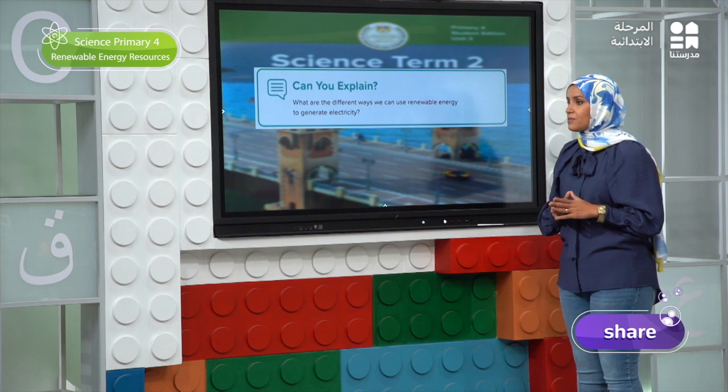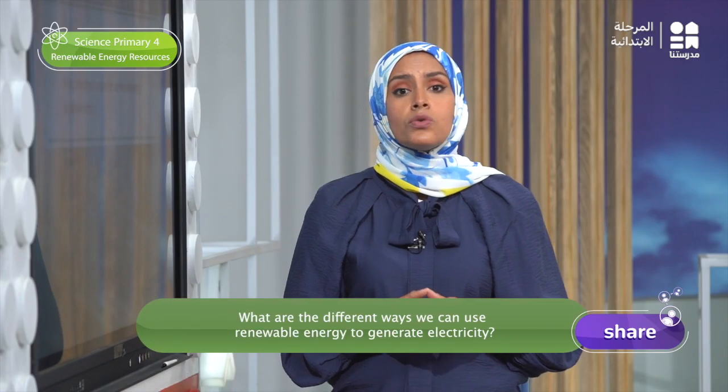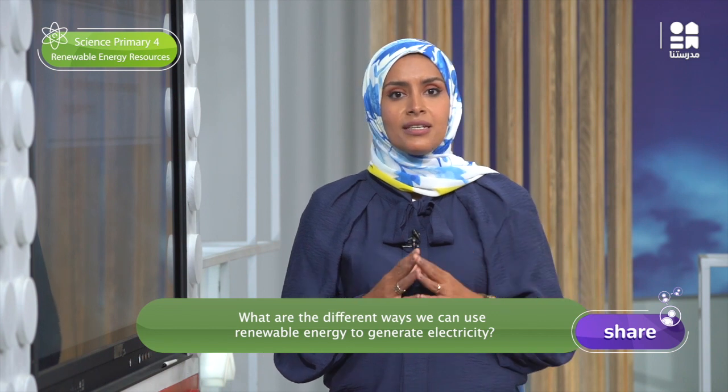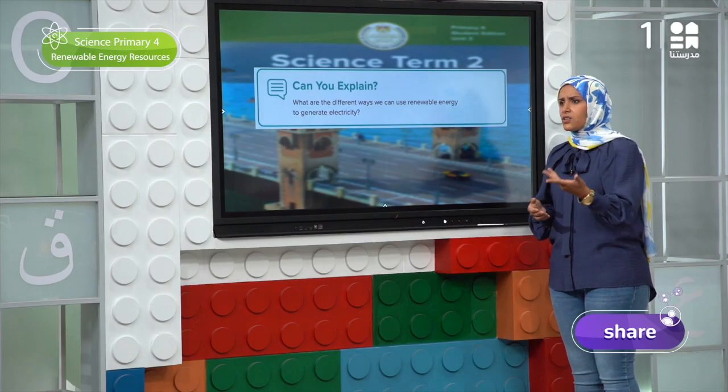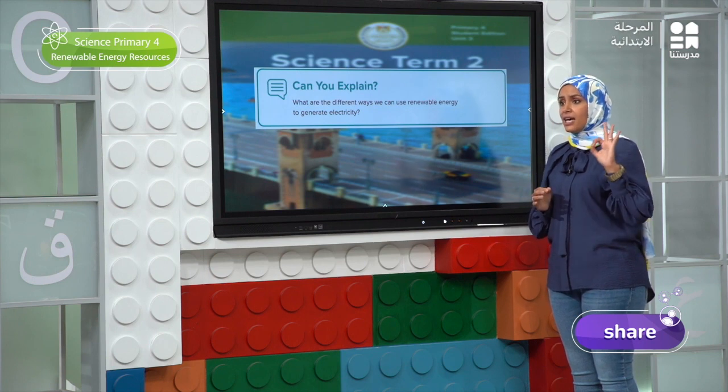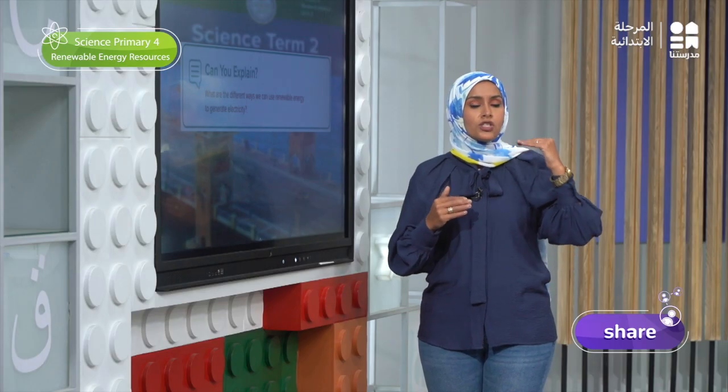Excellent, Hamza! You too surely learned a lot of information and evidence about wind mills and water mills, and you wrote them down in your explanation of the phenomena. Do you remember the next step? It's going back to the 'Can You Explain?' question: What are the different ways we can use renewable energy to generate electricity? As we do every time, we answer this question by writing the scientific explanation. Now I think you can write a scientific explanation with its three elements that always help you organize and arrange your thoughts.